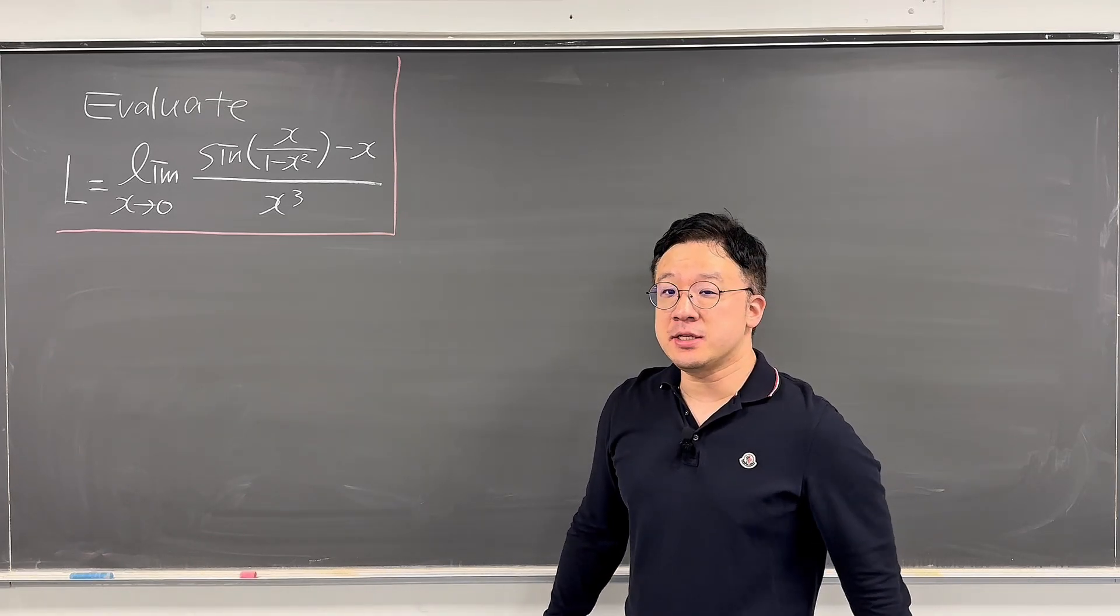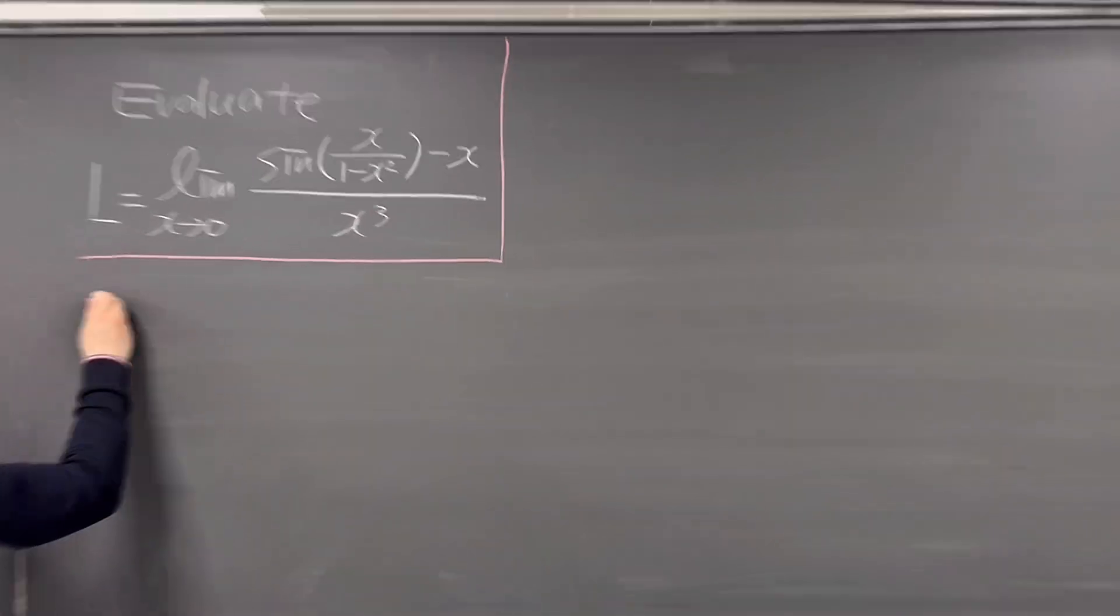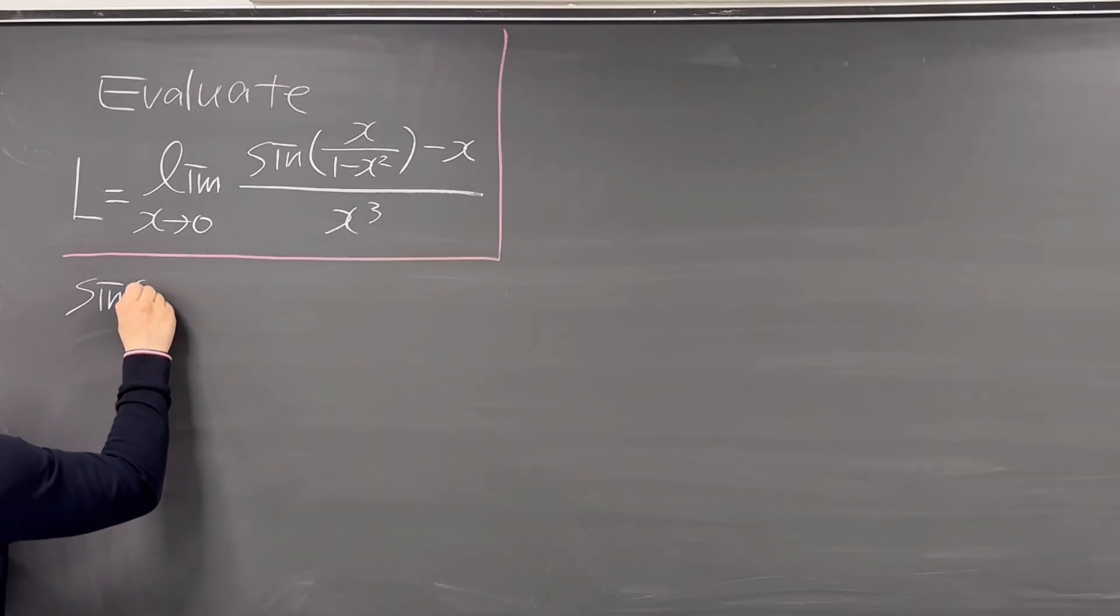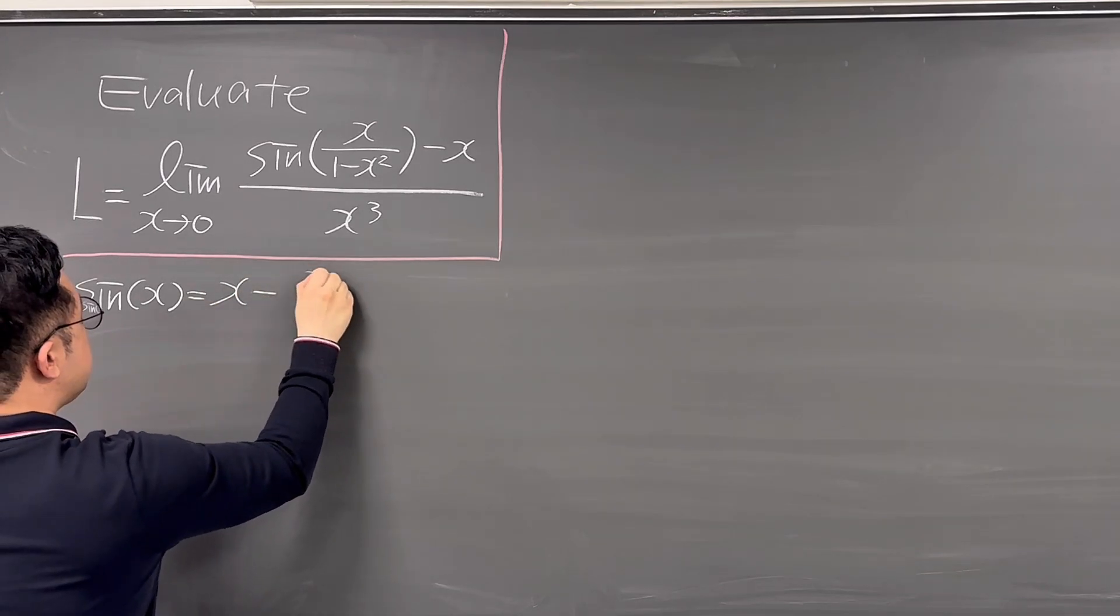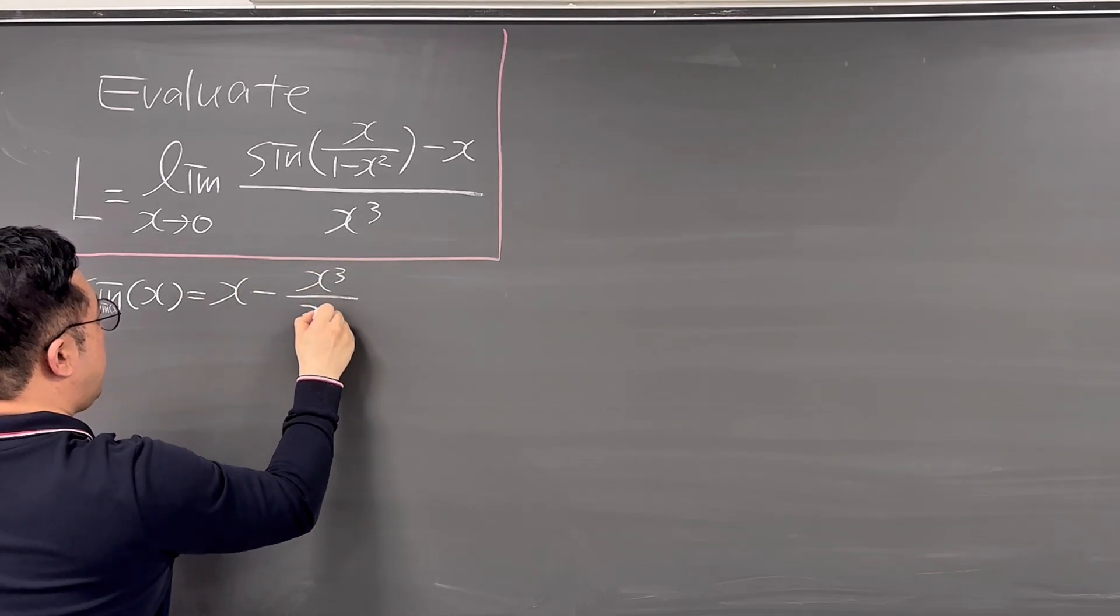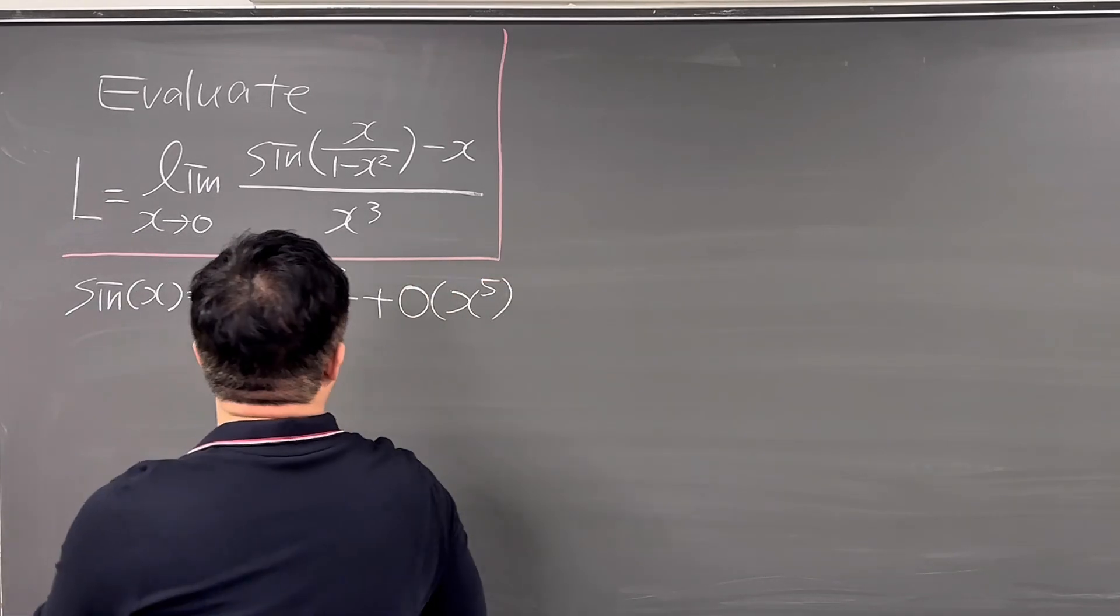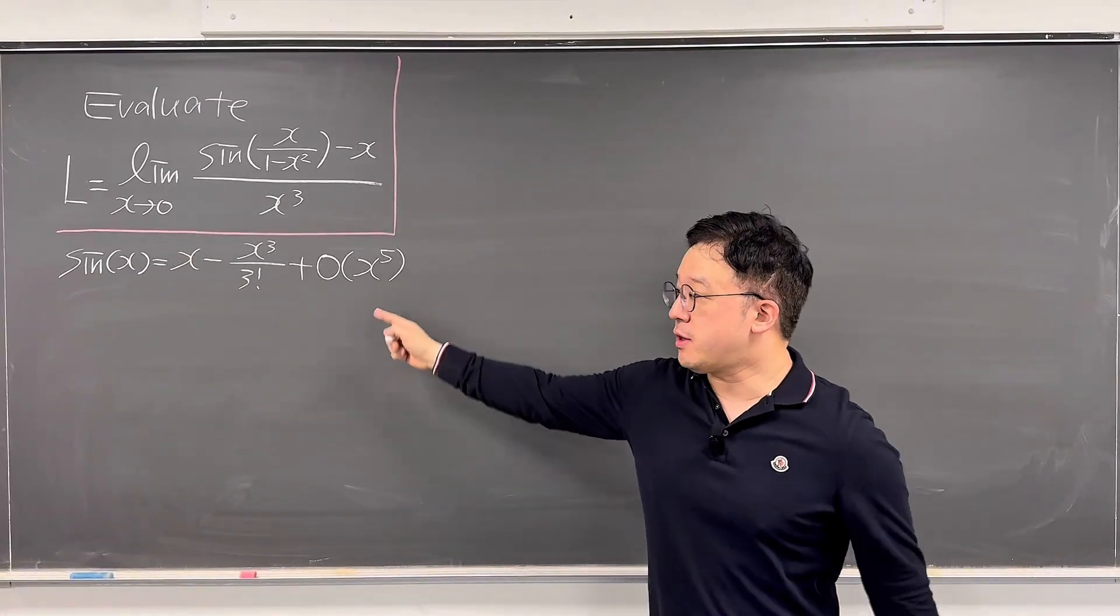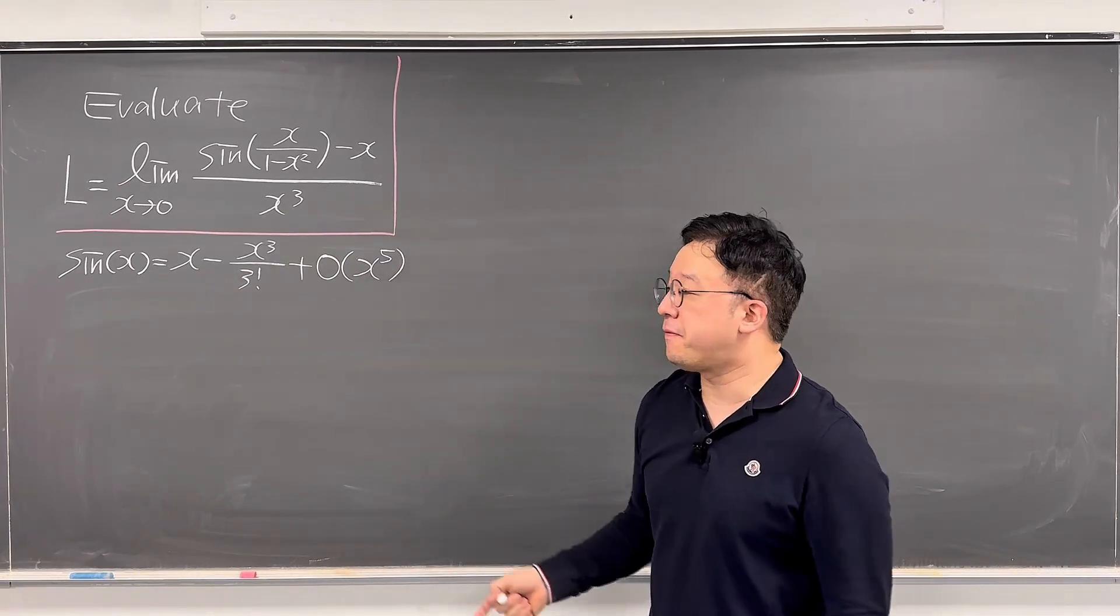We will not be using L'Hospital's rule, but using the Taylor series of sine of X first. So sine of X is represented as X minus X cubed over 3 factorial plus big O of X to the power of 5. About this big O, that means the remainder is now bounded by constant times X to the power of 5.